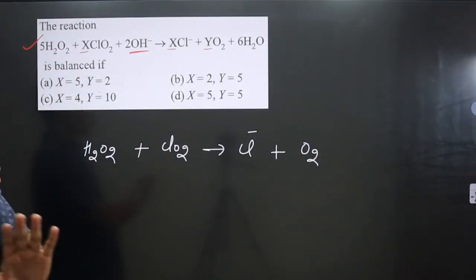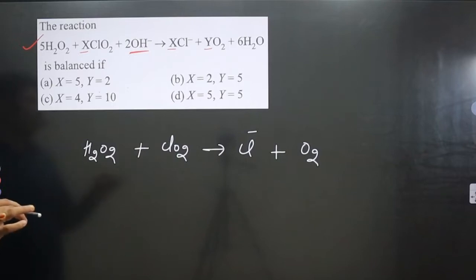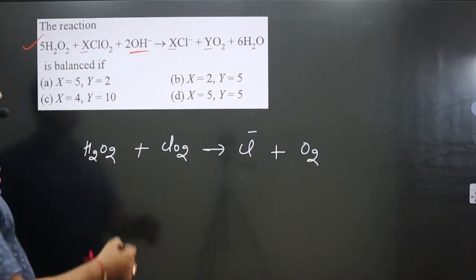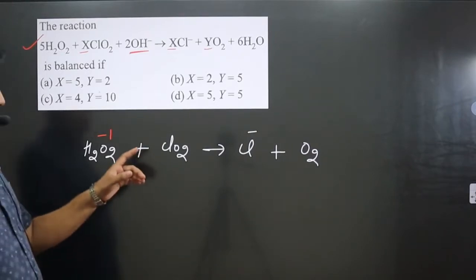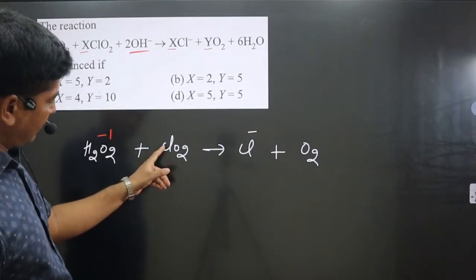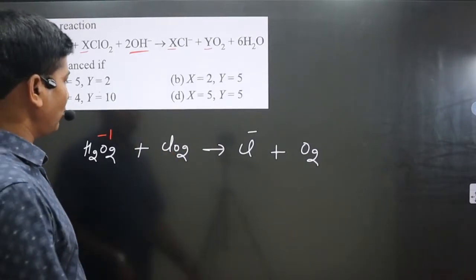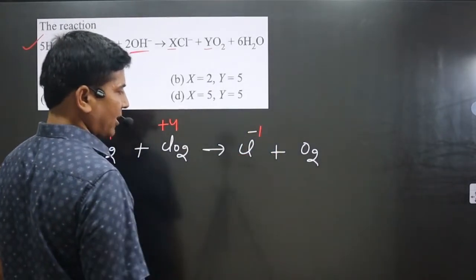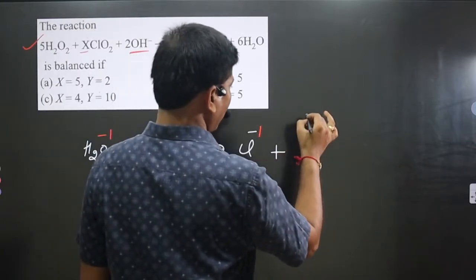First, we write down the oxidation numbers of elements on both sides. This is a peroxide, and in peroxide, oxygen is always -1. Two oxygens are there, each is -1. For ClO₂, Cl is in +4 oxidation state. Cl⁻ is a monatomic ion, so its charge equals its oxidation number.